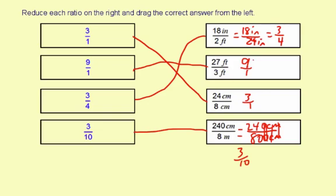So when you're reducing your ratio, make sure you make the units the same first, if necessary, and then just go ahead and reduce the fractions. And then, boom.